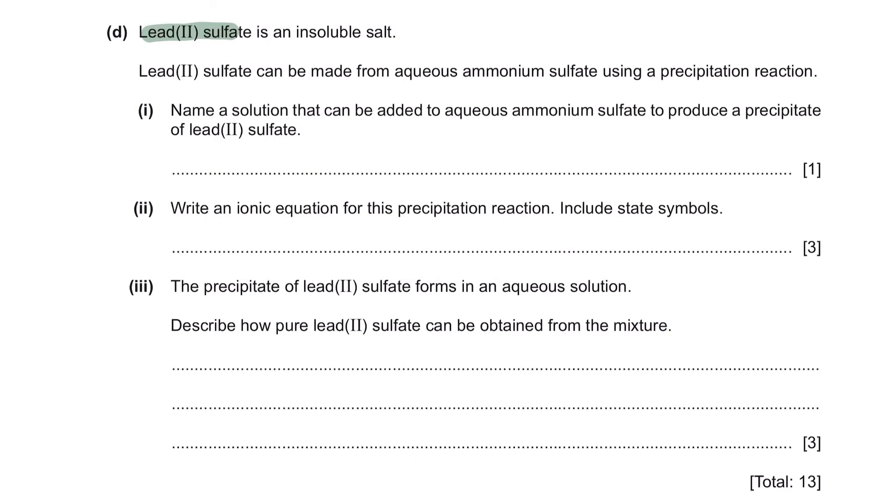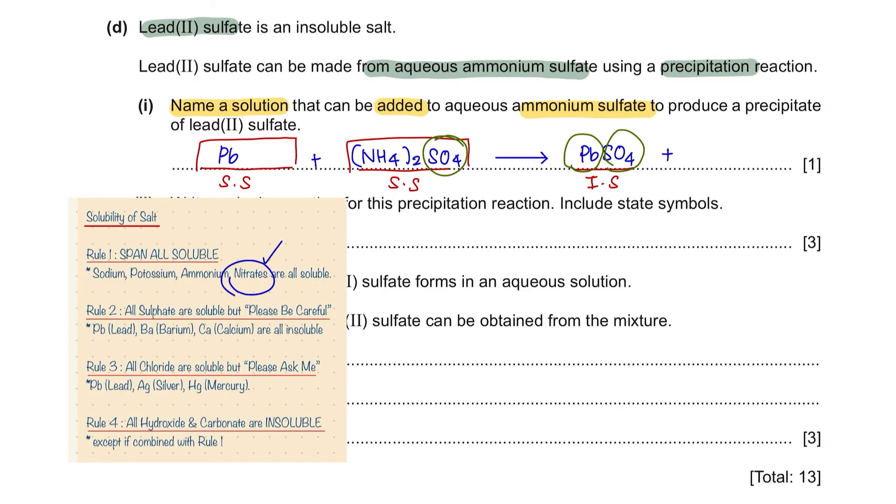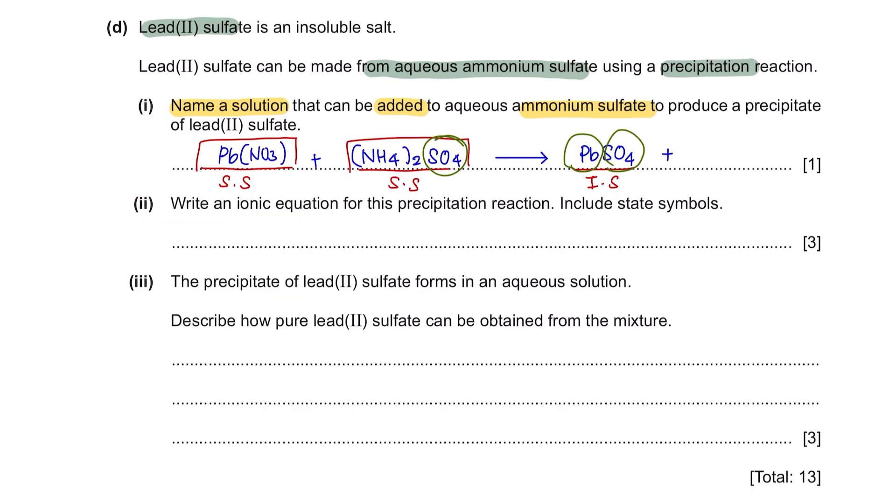Question D. Lead sulfate is an insoluble salt. Lead sulfate can be made from aqueous ammonium sulfate using a precipitation reaction. Part 1. Name a solution that can be added to aqueous ammonium sulfate to produce a precipitate of lead sulfate. So let's first write down the compounds that we have. A precipitate is an insoluble salt. To form an insoluble salt, we have to react 2 soluble salts together. The ions present in your salt is lead and sulfate. You already have sulfate here, meaning that we need to find another salt containing lead. Since all nitrates are soluble, we can use this as our anion. So the solution that can be added should be a soluble salt which is lead nitrate. The oxidation number of lead is 2, so we should include that as well.